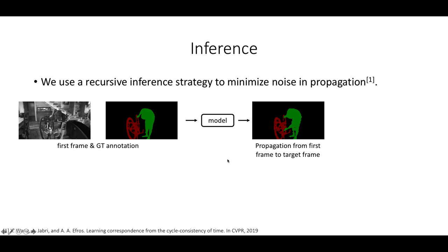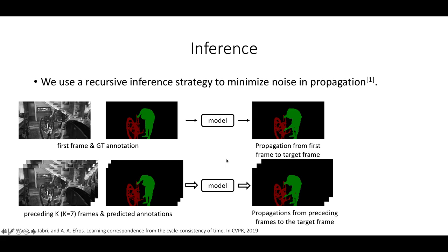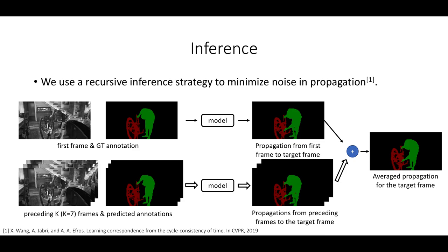To improve robustness, an alternative way is to use the recursive method to minimize noise. For example, we can propagate the ground truth annotations of the first frame, as well as the predicted annotations from the preceding K frames to the target frame. K equals 7 in the experiment. We average all the propagations to get the final prediction for the target frame, and we show that the noise can be depressed a lot by this recursive processing.